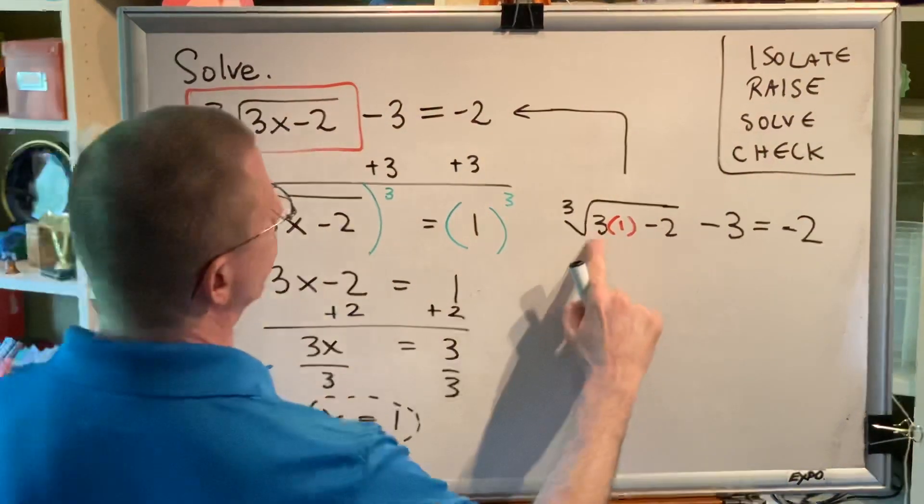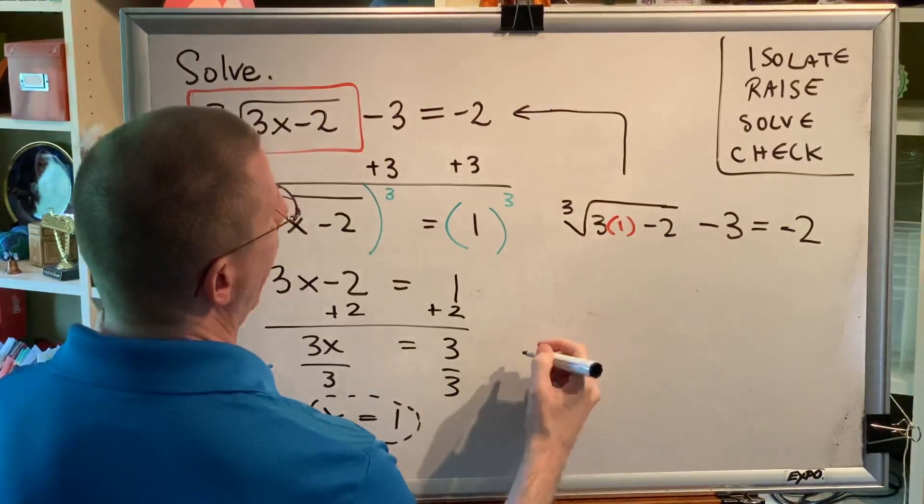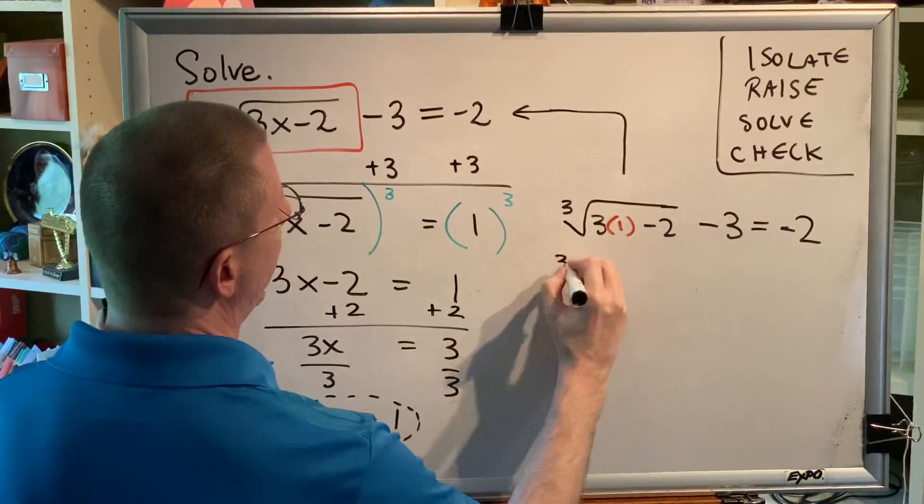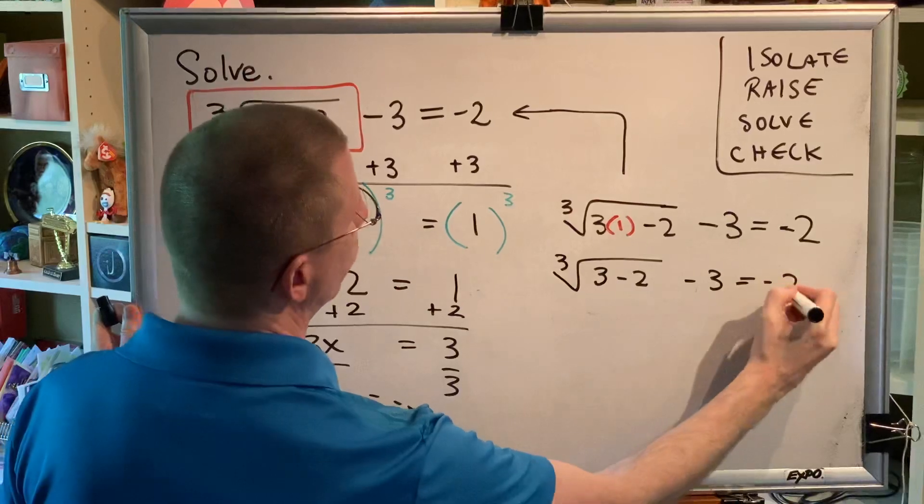Following order of operations, we work with inside our grouping symbol, which is the radical first, and multiplication before subtraction. 3 times 1 is 3. So, we have the cube root of 3, subtract 2, minus 3, equals negative 2.